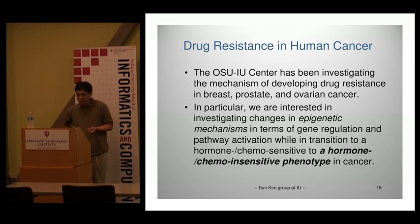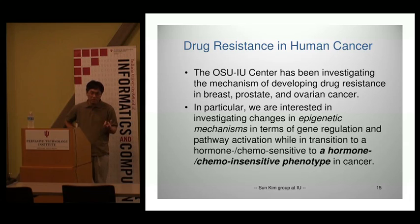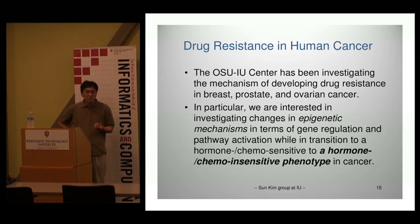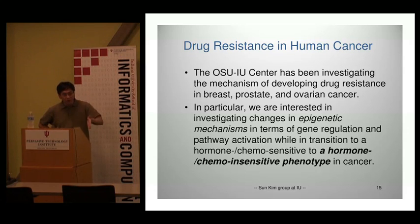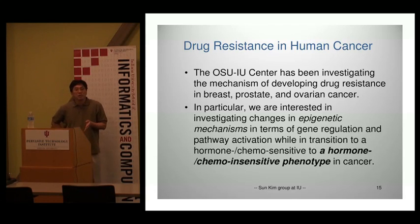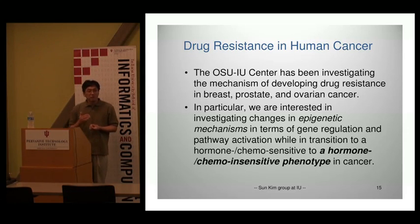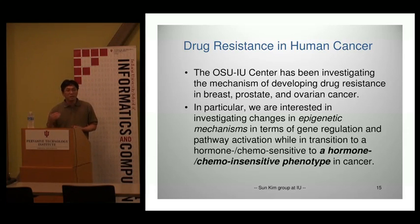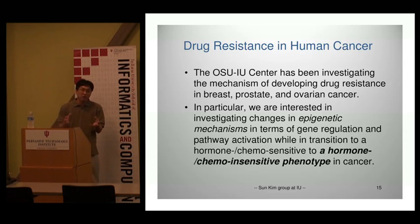Those cancers originally have drug targets. For breast cancer, estrogen is important; for prostate cancer, androgen is important; and for ovarian cancer, TGF-beta is very important. We know those pathways and our cancer treatment targets those biological pathways. But when you treat a patient with drugs and cancer looks okay, later it can relapse with a drug resistance mechanism. We don't know why or how, but they become cancer again with drug resistance, meaning we have no treatment for those patients.